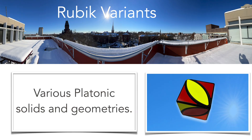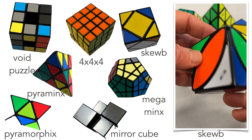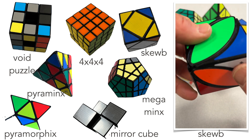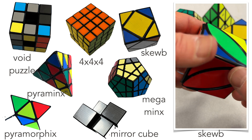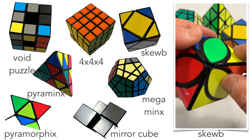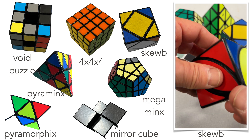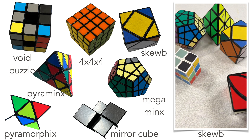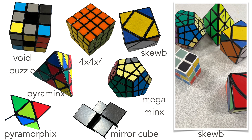There are literally hundreds of variants of Rubik-type puzzles, and here are a couple of them. You see me playing here with a skewed type — it's kind of like a Rubik-type puzzle, and you can essentially take any polyhedra and any division and build a puzzle.